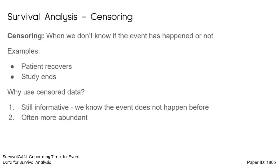The key element of survival analysis is censoring. This is when we don't know if the event has happened or not — for example, a patient recovers or a study ends, so at time t the subject has been censored. But why use censored data? It's still informative: we know the event has not happened before this time, and censored data is often more abundant than non-censored data.